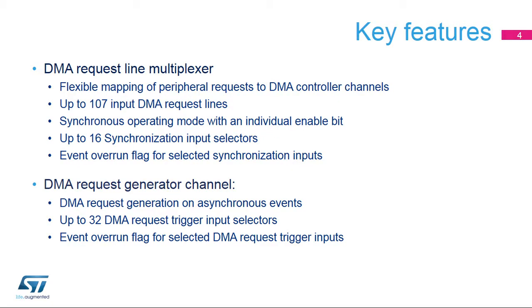DMA MUX main features include: up to 16-channel programmable DMA request line multiplexer output, up to 8-channel DMA Request Generator, up to 107 DMA request lines, and synchronous operating mode per DMA request generator channel, DMA request trigger input selector, DMA request counter, and event overrun flag for the selected DMA request trigger input. Per DMA request line multiplexer channel output: up to 107 input DMA request lines from peripherals, 1 DMA request line output, synchronization input selector, DMA request counter, event overrun flag for selected synchronization inputs, and 1 event output for DMA request chaining.